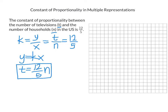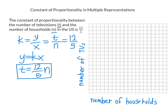Next, we want to create a graph. The number of households is our x, the independent variable, and the number of televisions is the dependent variable on the y-axis. This is a 20 by 20 graph. If we were to count by ones, doubling 12 gives 24 over 5, which goes right off the graph, so we need to think about how to number the axes.